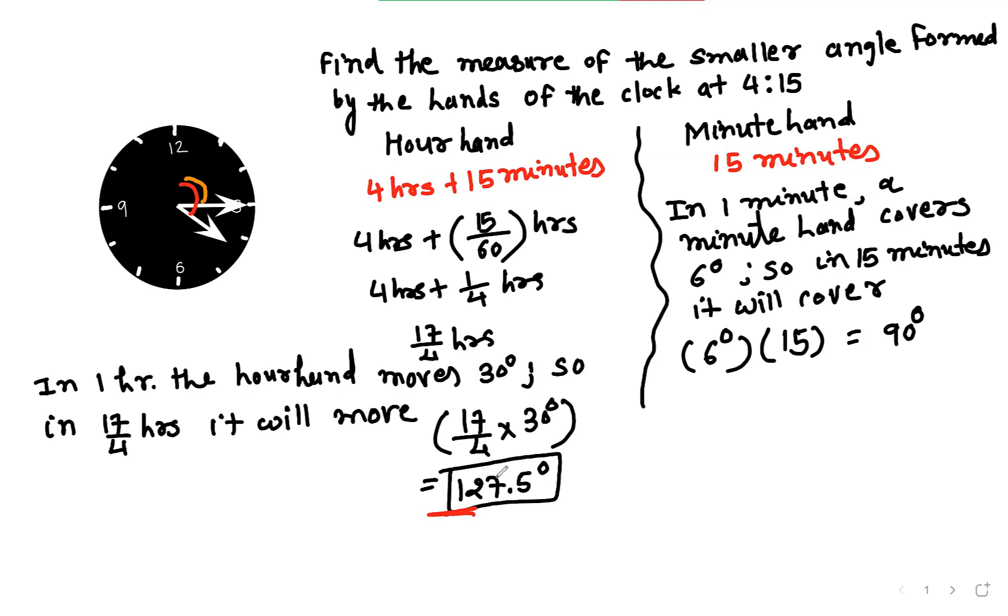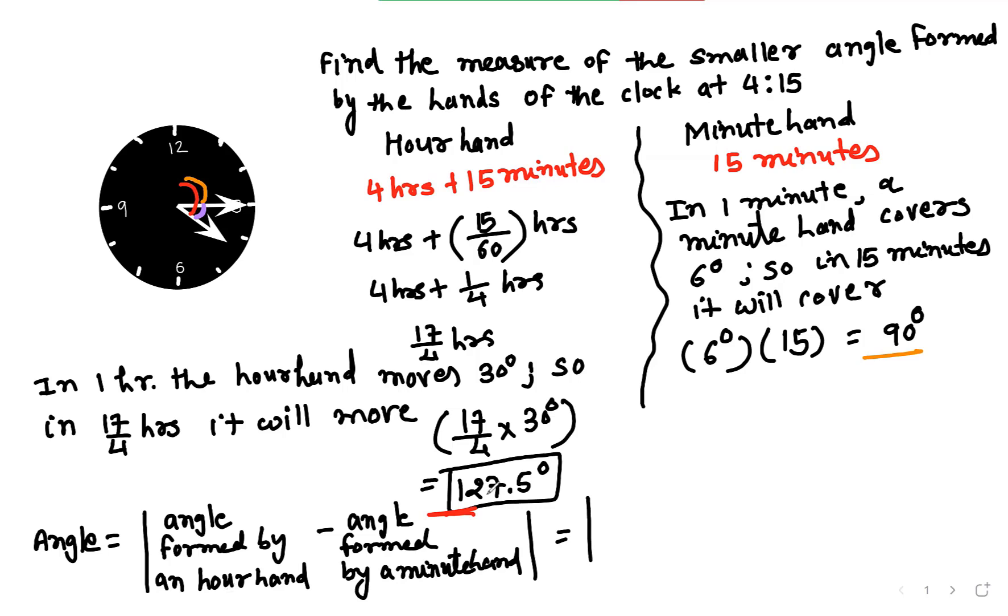Now we're looking for the smaller angle formed by these two angles. We take the hour hand angle and subtract the minute hand angle from it. The angle measure should be positive, so we take the absolute value. That's 127.5 degrees minus 90 degrees, which equals 37.5 degrees.